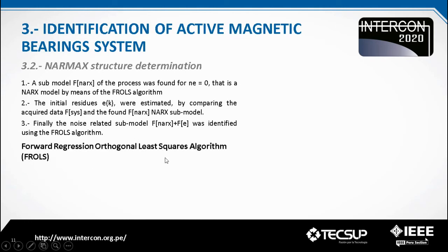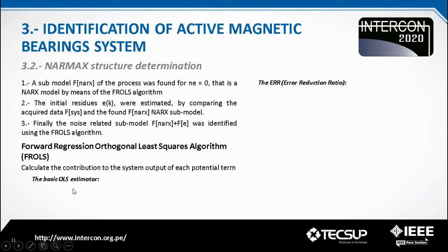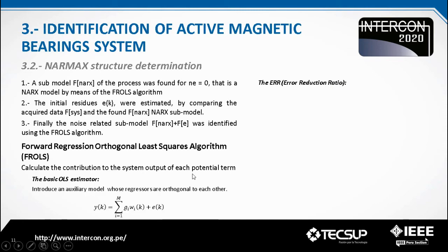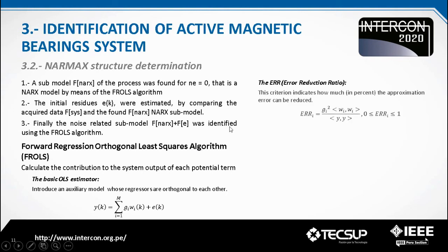This algorithm was developed to determine the terms of the NARX models and calculate the contribution to the existing output of each potential term. It is essentially the basic orthogonal least-squares estimator, but in each step a complete search of all unselected terms is performed to find the best term, using the error reduction ratio criterion. The basic idea of the orthogonal least-squares estimator is to introduce an auxiliary model through transformation of the original non-orthogonal regression model into another regression model whose regressors are orthogonal to each other. The error reduction ratio was proposed to determine the terms to be included in the model.